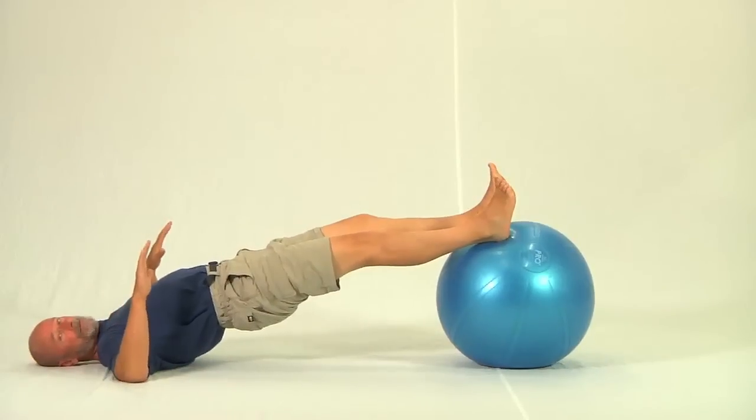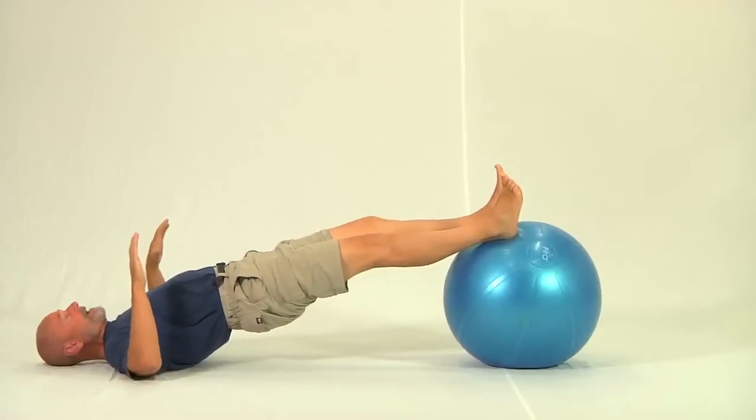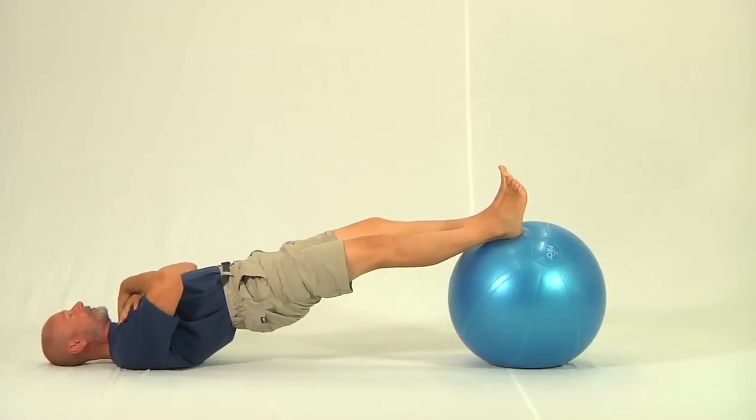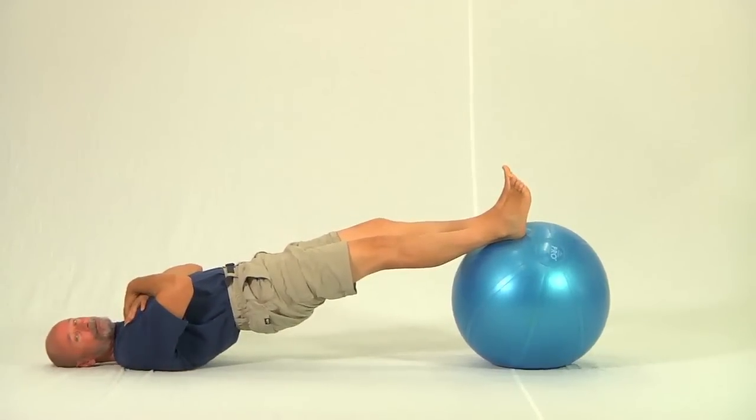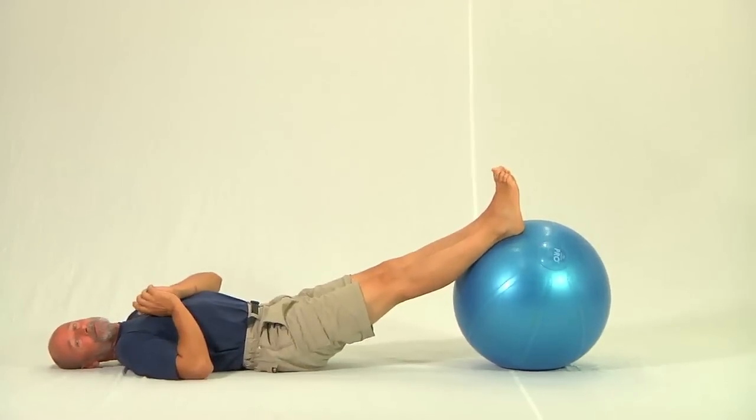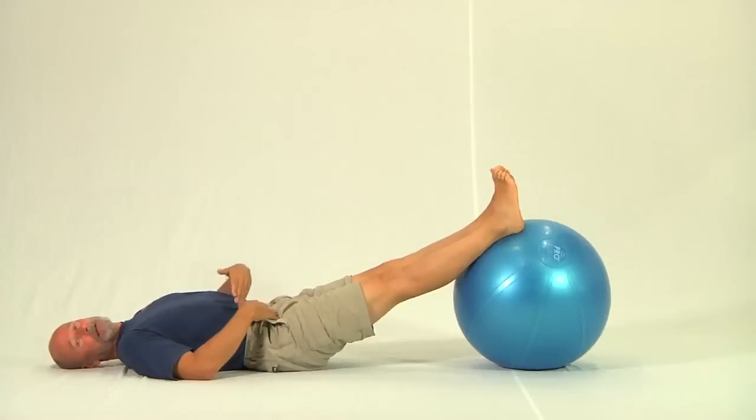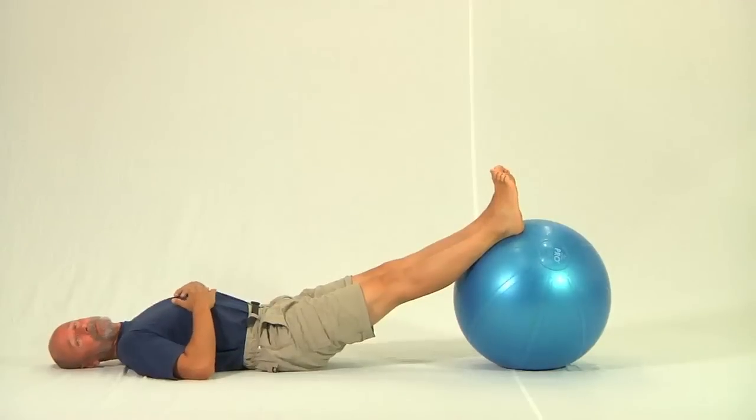You can also decrease your stability base by lifting your forearms off the ground, or finally doing the exercise with your hands crossed across your chest. Each of those little variations makes it more difficult simply because the stability base has decreased, or the leverages increase. Those are the two key things if you want to make any Swiss ball exercise more difficult.